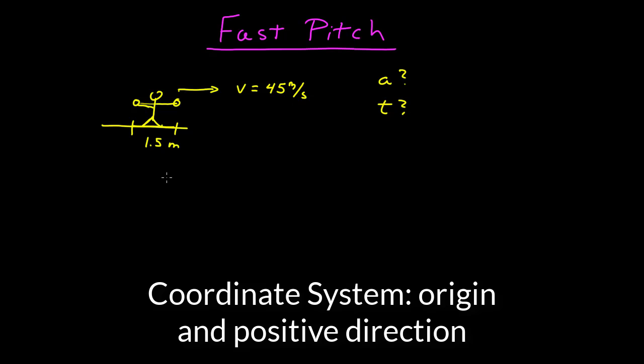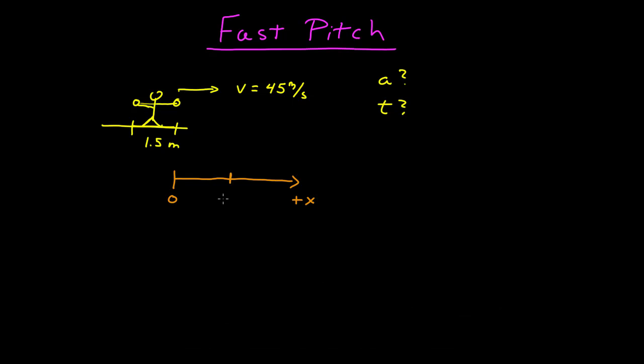Let me switch over to a schematic diagram. I need a coordinate system. I'm going to put x along the direction of acceleration. I'm going to say it started at x is equal to 0. And then it was released at a final value of x, which is 1.5 meters. So it was accelerated over this distance.